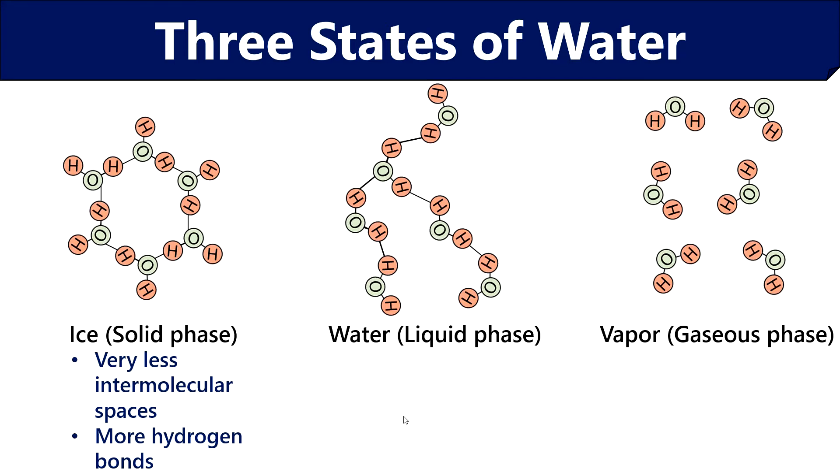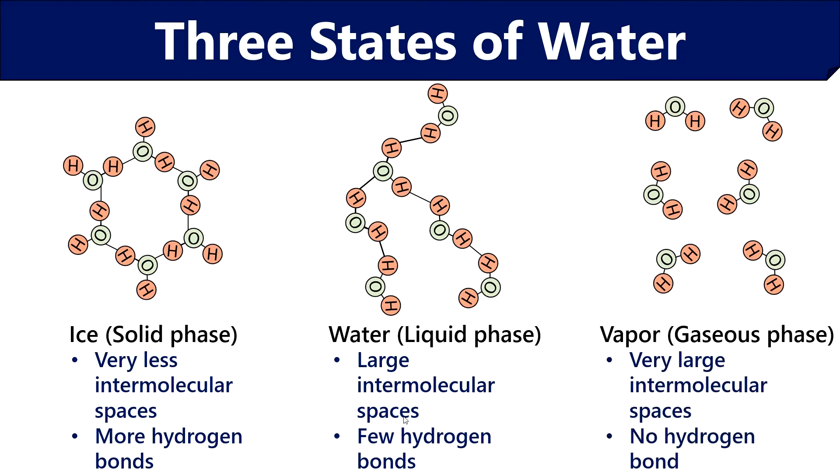Water molecules in liquid phase contain large intermolecular spaces where the molecules are firmly arranged, or the water molecules can slide over one another to some extent. And liquid state of water contains a few hydrogen bonds. Finally, the gaseous phase of water, meaning water vapor, contains very large intermolecular spaces and the water molecules can move freely or independently because there is no hydrogen bond formed between the neighboring water molecules.